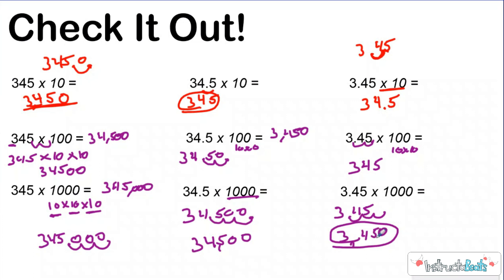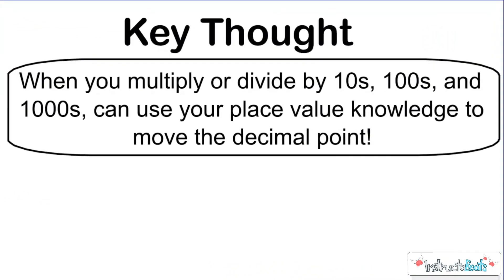So that's what we're doing when we multiply by tens, hundreds, and thousands — we're just moving the decimal to move our digits' place values. Key thought: when you multiply or divide by tens, hundreds, and thousands, you can use your place value knowledge to move the decimal point and make it quicker.